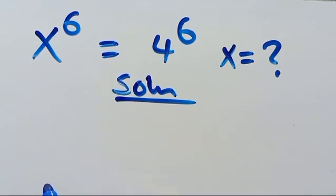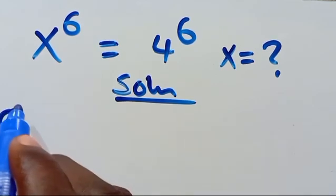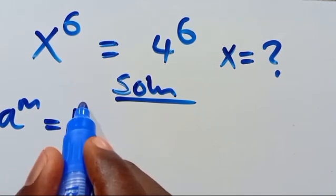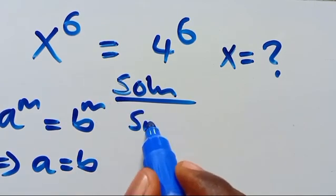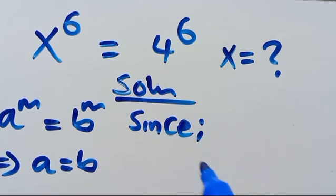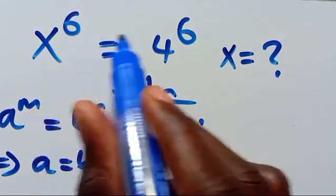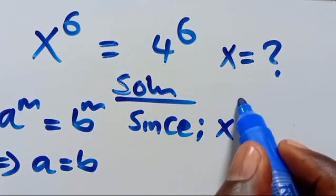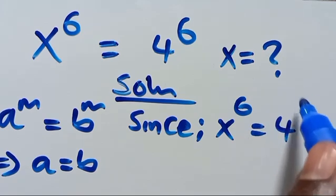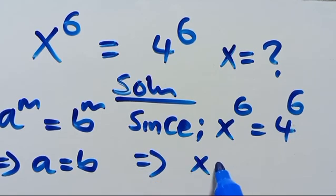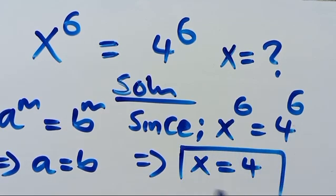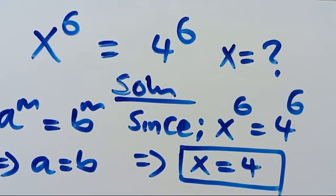Let's find the solution. Recall from the law of indices that when we have a to the power of m equals b to the power of m, this implies that a equals b. So likewise, since we have the same power, we have x to the power of 6 equals 4 to the power of 6, which implies that x equals 4. So x equals 4 is the first solution for this problem.